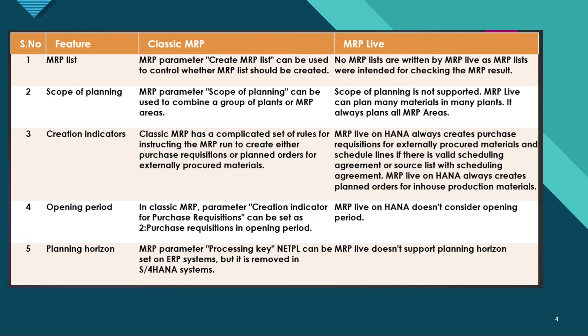MRP Live also creates planned orders for in-house production materials. Regarding opening period: in classic MRP, the creation indicator for purchase requisition can be set to 2, meaning purchase requisitions in the opening period. In MRP Live, it doesn't consider any opening period.